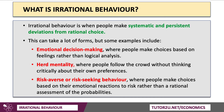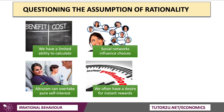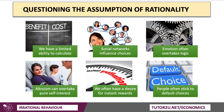Irrational behaviour is a movement away from this assumption. It's when people make systematic and persistent deviations from rational choice — making choices based on feelings rather than logical analysis, following the crowd without thinking critically, or reacting emotionally to risk rather than making a rational assessment of probability. People have a limited ability to calculate and don't always operate in their own self-interest. Altruism can overtake pure self-interested behaviour. We live in a world of overlapping, complex, constantly changing social networks. There's a desire for instant rather than long-term rewards, emotion often overtakes logic, and people often stick to default choices even when, in theory, they should be making a different choice.